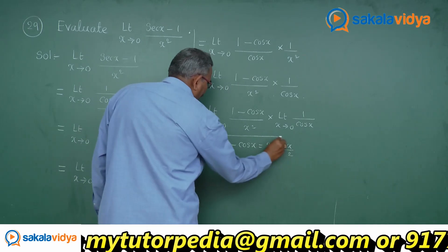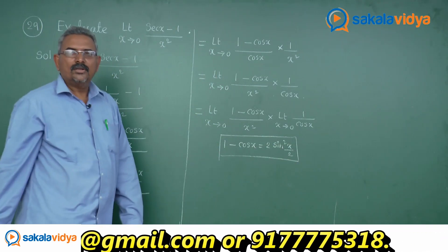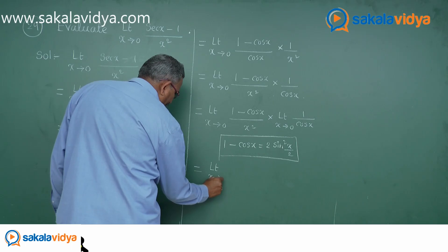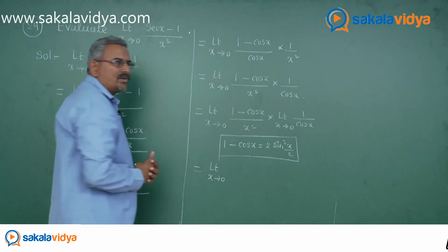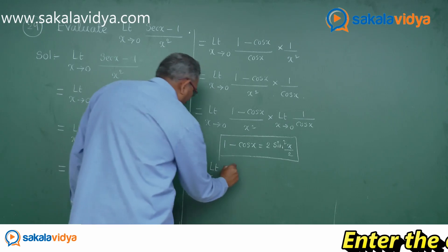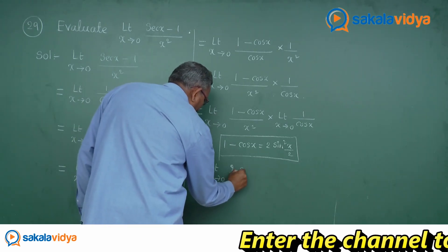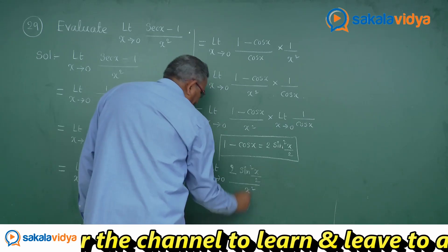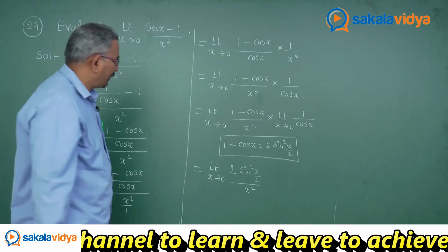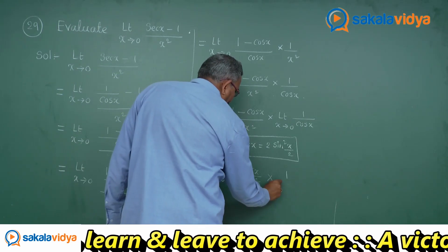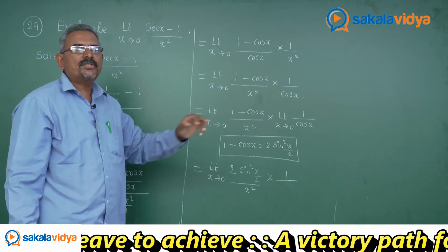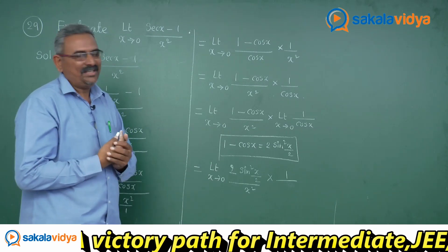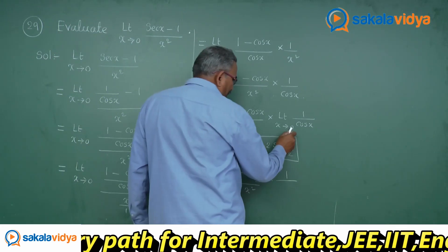This is a very important formula. This can be written as limit x tends to 0: 1 minus cos x is replaced by 2 sin square of x by 2, that is 2 sin square of x by 2, by x square. And multiplied by 1 by cos x. As x approaches to 0, the value of cos x is obviously 1 itself. So that means, as x approaches to 0, cos x is 1, so 1 by cos x is 1 by 1.